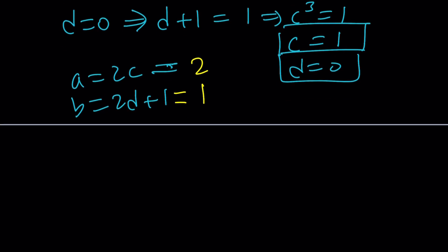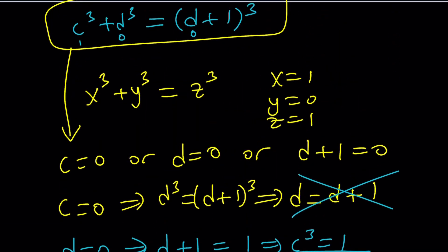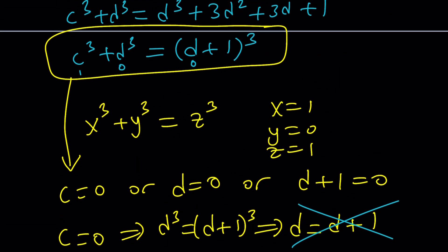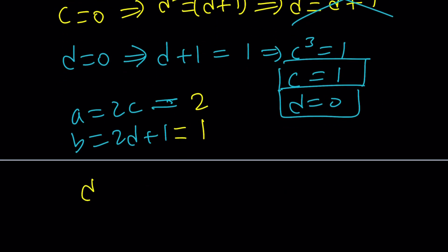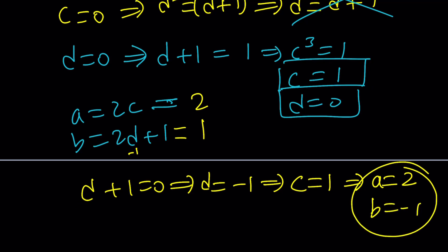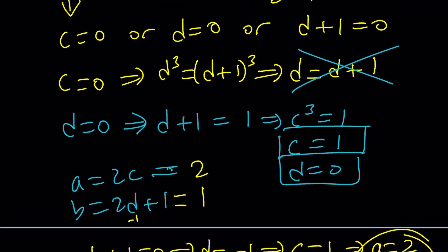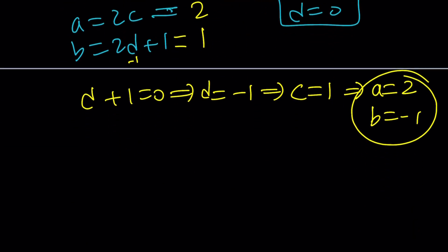Now let's consider another case. Remember, we had this equation. Now D + 1 can also be 0. Which means D is equal to -1. So what happens? If D + 1 is 0, which implies that D is -1, from here we get C = 1. And if C is equal to 1, again A is going to be 2. But in this case, because D is negative, B is going to be -1. So we're going to get another ordered pair, (2, -1). We've got (2, 1), and now we have (2, -1).